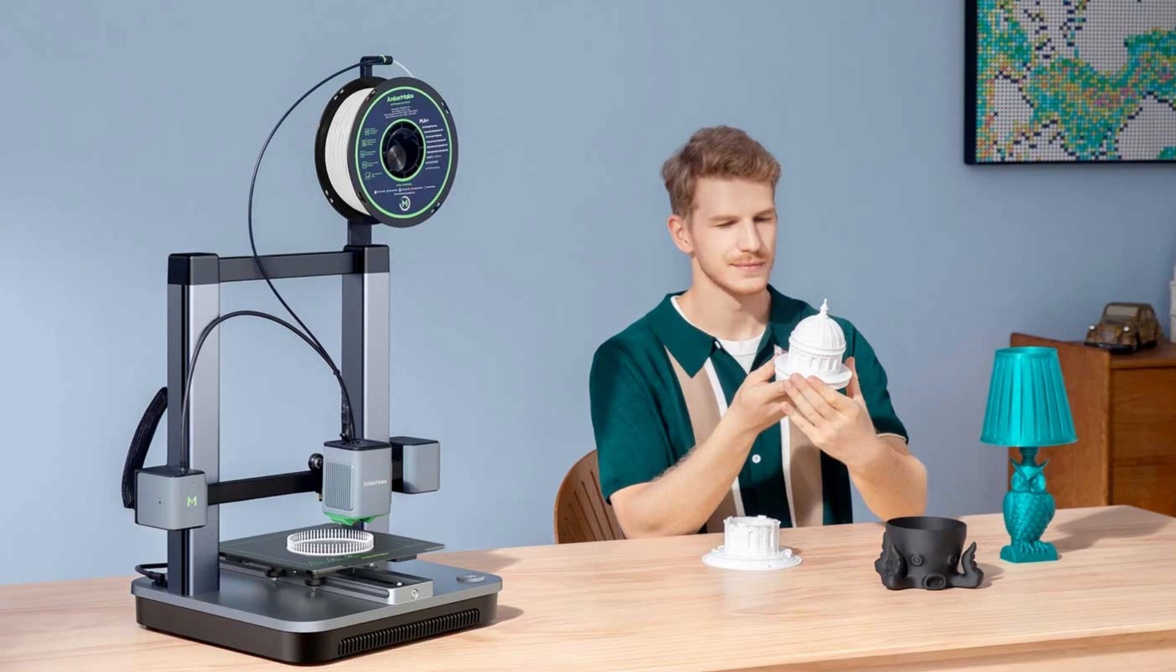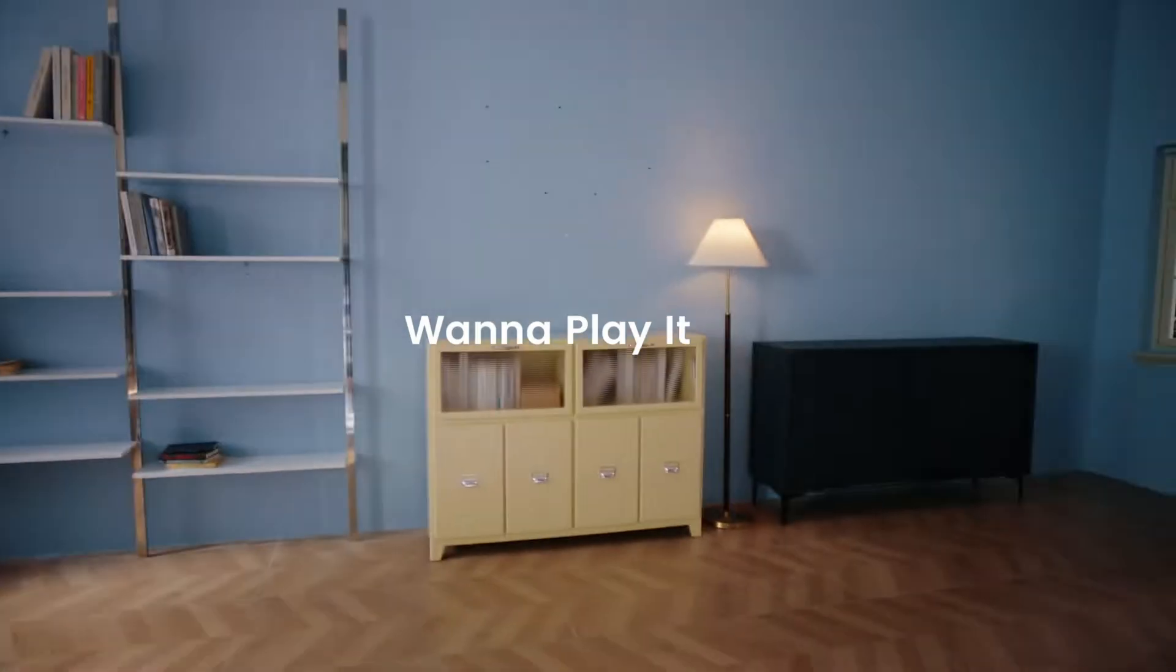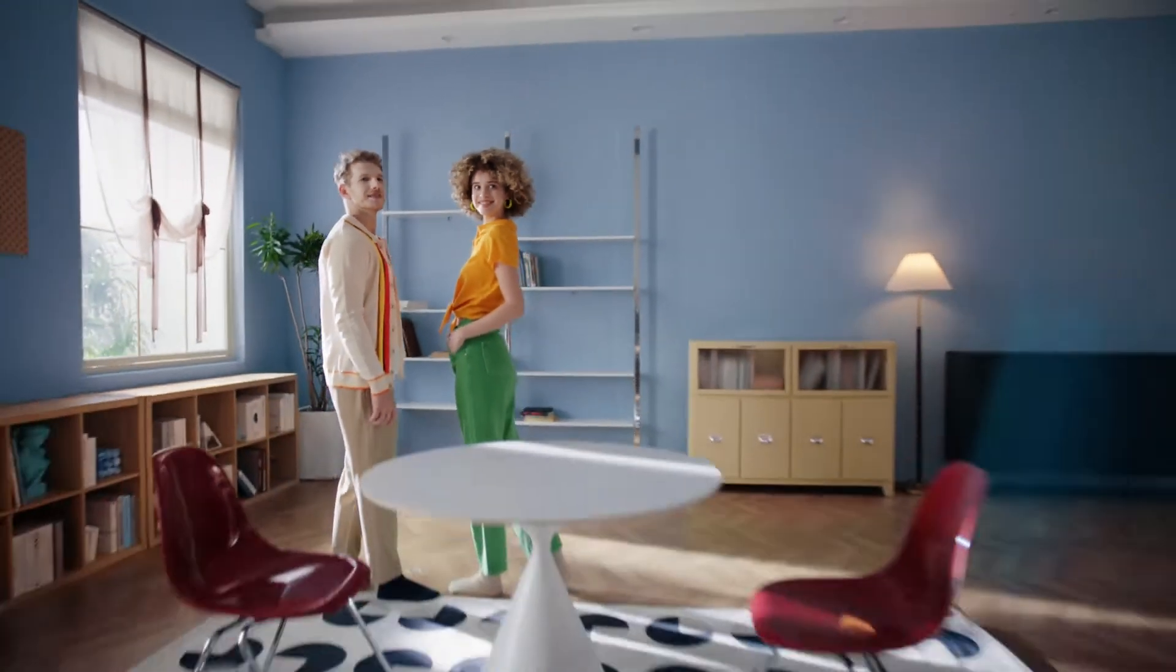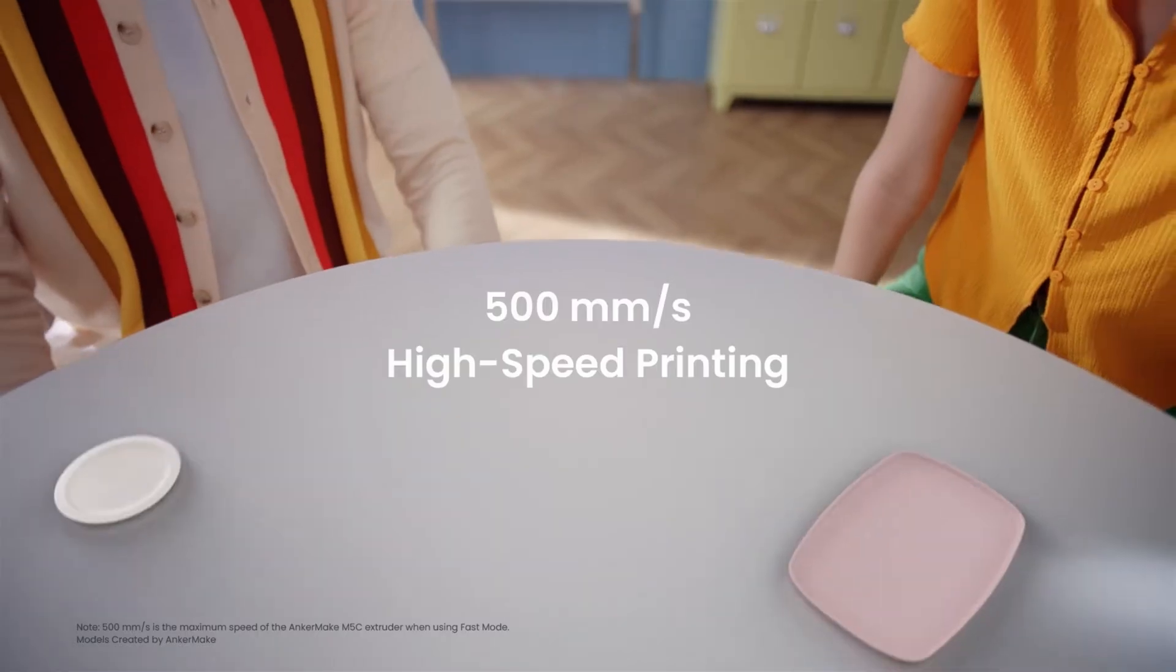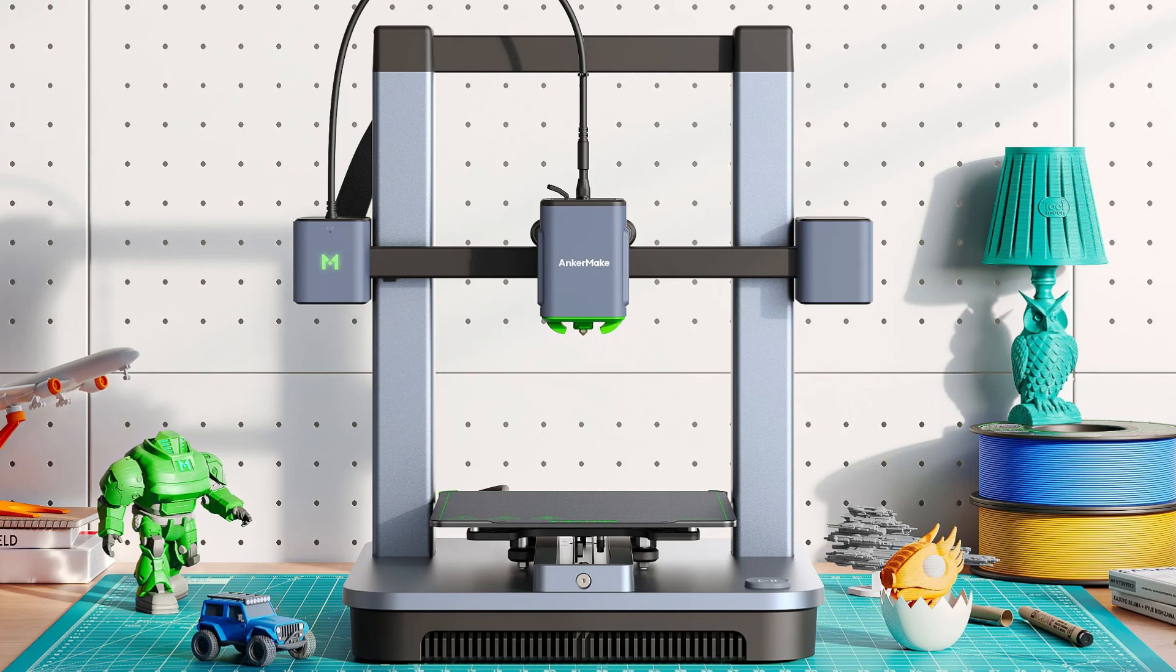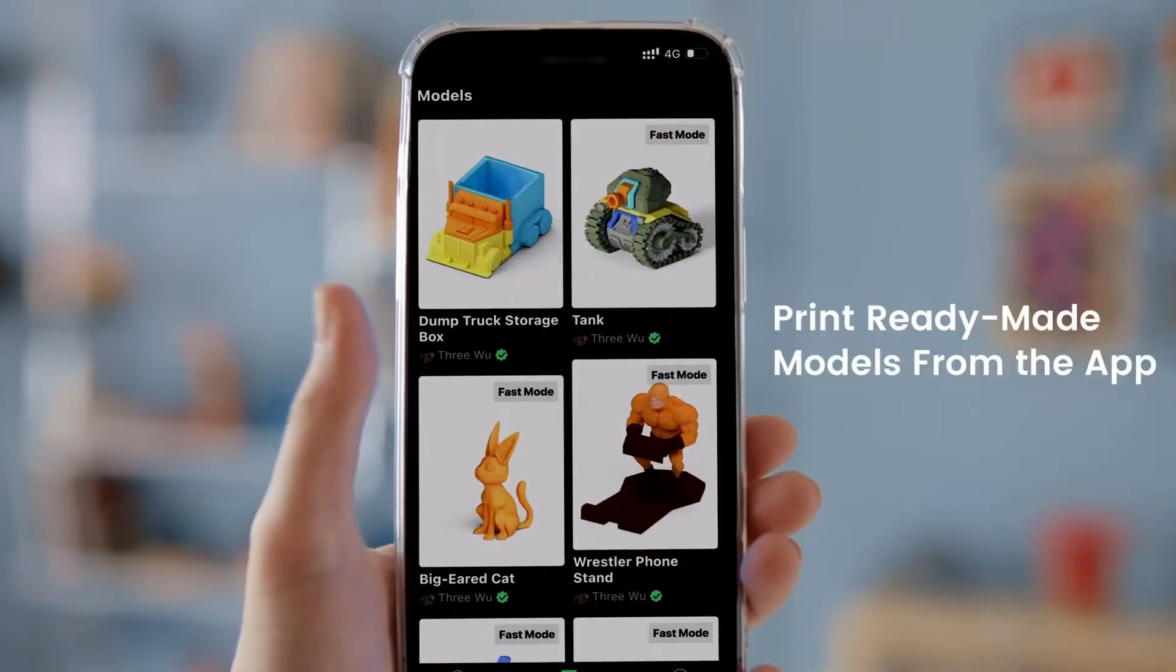This ensures faster, more efficient model creation without compromising on detail. Stay in control effortlessly with Wi-Fi and Bluetooth connectivity, allowing you to manage prints, monitor progress and transfer sliced models directly from your mobile device using the intuitive Ankomake app.